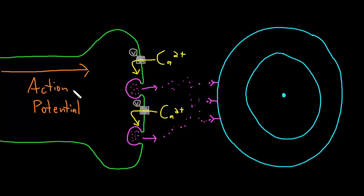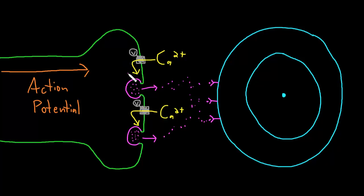Recall that the information contained in action potentials is really contained in the frequency and duration of a train of action potentials being fired down the axon. That information is converted into the amount and duration that neurotransmitter is present in the synaptic cleft. An increased frequency of action potentials reaching the axon terminal causes more opening of the voltage-gated calcium channels, so more calcium flows in, and an increased calcium concentration causes more synaptic vesicles to fuse, releasing a greater amount of neurotransmitter into the synaptic cleft.